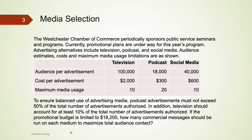In this example, the company would like to know how many ads should be run on each medium in order to maximize total audience contact. There are several constraints. For example, the company decides to run at most 10 TV commercials, 20 podcast ads, and 10 social media ads. There is only a total budget of $18,200.